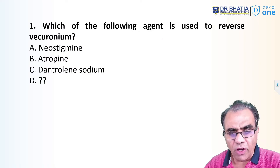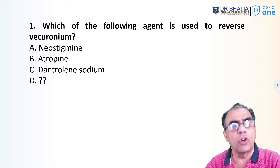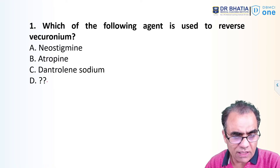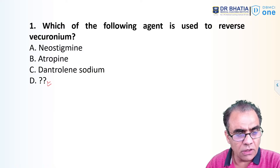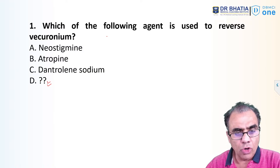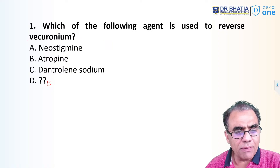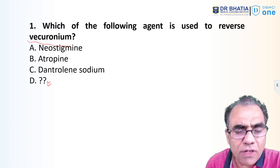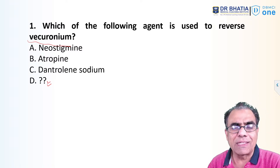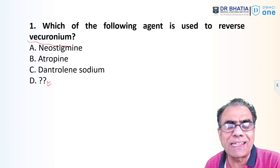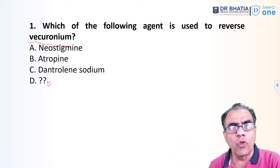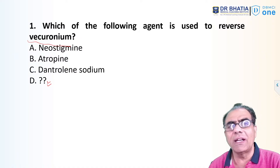Which of the following agents is used to reverse vecuronium? The choices are neostigmine, atropine, dendrolium, dendrolin sodium, and another choice which no student could provide. You know that vecuronium is a non-depolarizing muscle relaxant and you have to reverse the effect of non-depolarizing muscle relaxants by giving cholinesterase inhibitors, which can be neostigmine, pyridostigmine, or edrophonium.